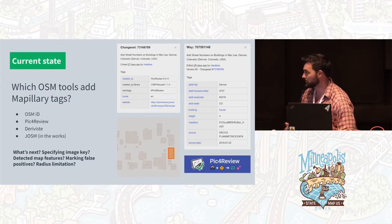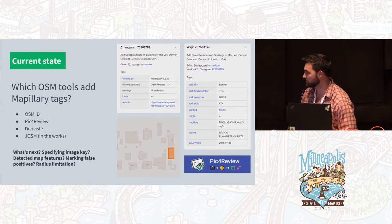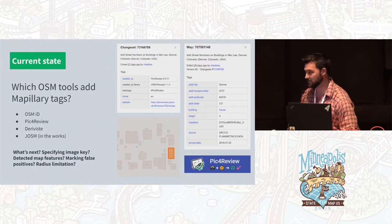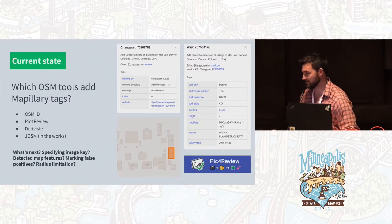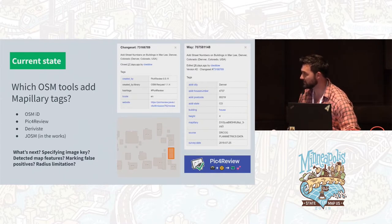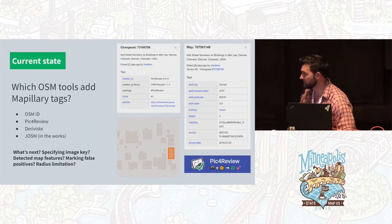Another tool is Pick for Review, which allows you to go through discrepancies or different tags in OSM and finds images that look at them. Deriviste is another one that allows you to use Mapillary imagery, click in the image, and add points to the map. In JOSM, there is also a plan in the works to add the source tag automatically if you're using the Mapillary viewer to edit.